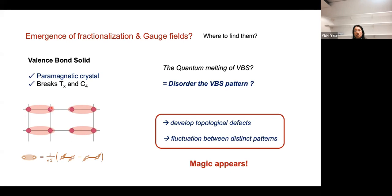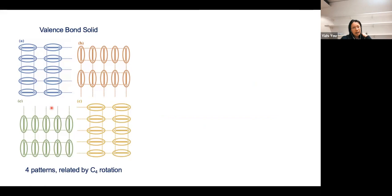We will consider the quantum melting transition of such a valence bond solid — we want to disorder or kill the VBS order parameter. To disorder the valence bond pattern we need to develop topological defects of the VBS. The VBS breaks the site-centered C4 rotation symmetry and the ground state is fourfold degenerate, since we can have four valence bond patterns on the four links of the square lattice. These four distinct valence bond solid patterns are related by the site-centered C4 rotation symmetry.